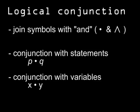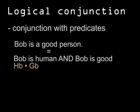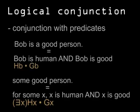AND has less obvious applications. If we want to say that Bob is a good person, we can break that sentence into 'Bob is human and Bob is good.' We can render 'some good person' as 'for some x, x is human and x is good.' Like many operators, AND may be represented by different symbols in different texts, so stick with one and learn others as needed.